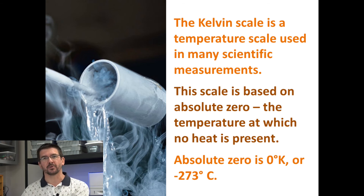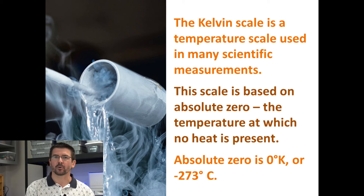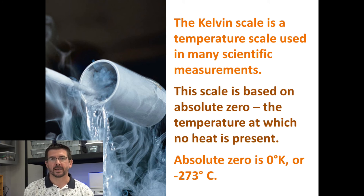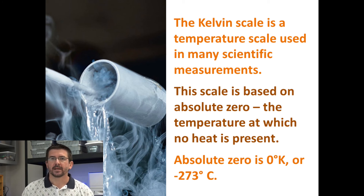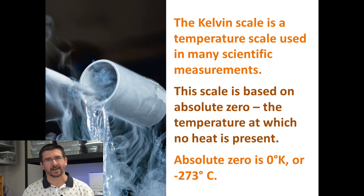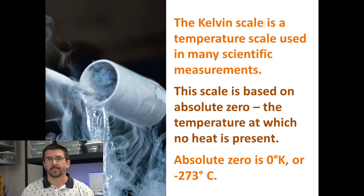The warmer an object gets, the faster its molecules move; the cooler it gets, the slower they move. If it ever got so cold that molecules completely stopped moving, there would be no thermal energy — that would be absolute zero. Scientists haven't been able to reach it; they've gotten very close, but no matter how much they try to cool a substance, there's always a little bit of movement. On the Celsius scale, absolute zero would be negative 273 degrees. But on the Kelvin scale, we start at absolute zero with no negative numbers, so this temperature is simply zero Kelvin, making the Kelvin scale great for measuring very low temperatures.